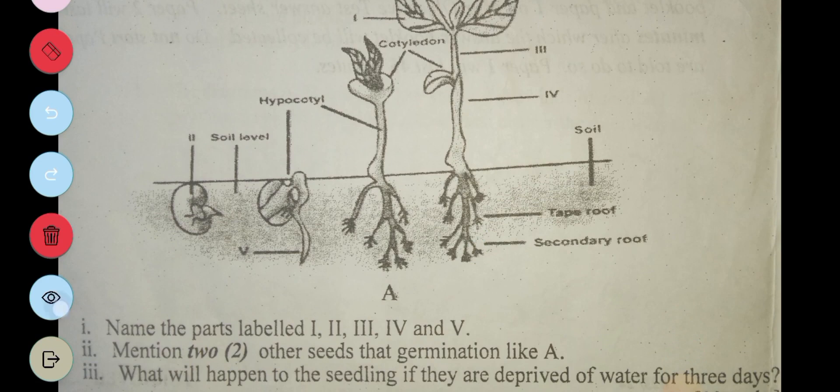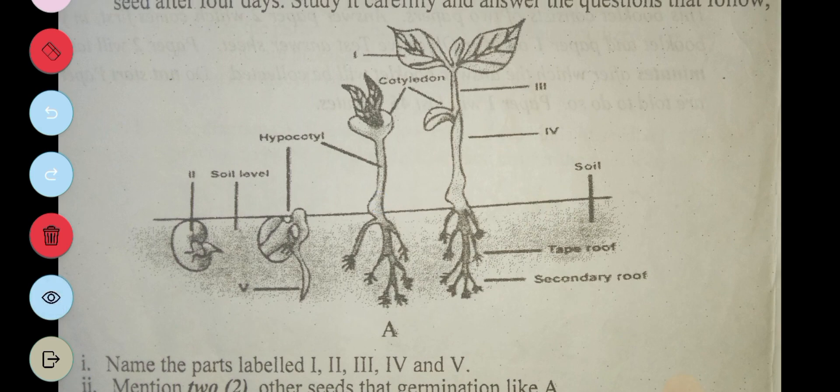This says name parts I to V. So I is foliage leaf. II, that's the seed. III, it's called the epicotyl. IV is the hypocotyl. And then V is the radicle.